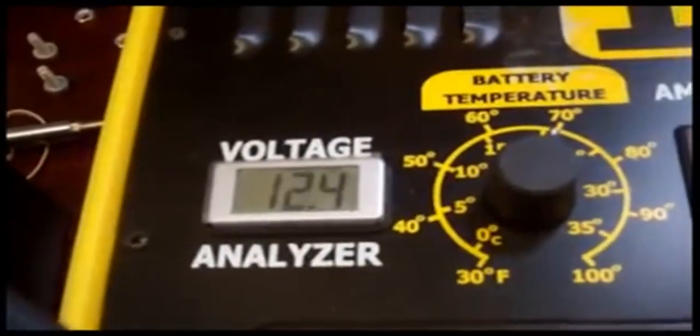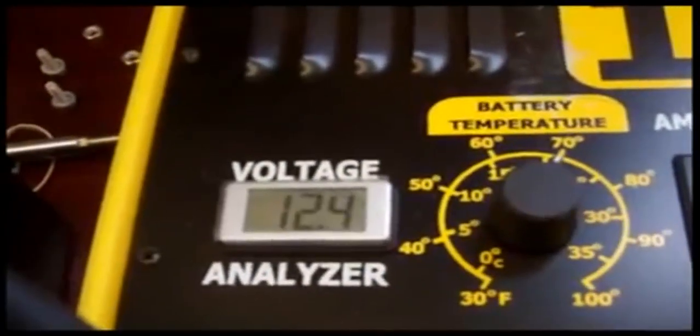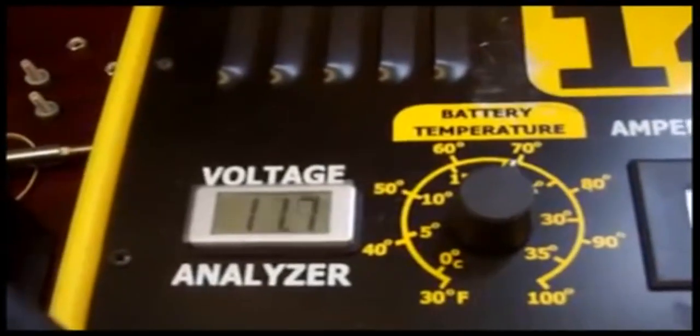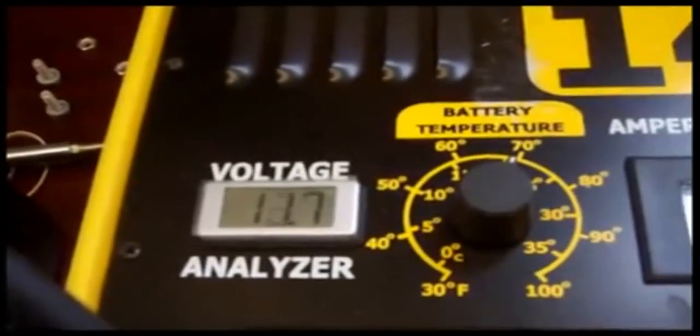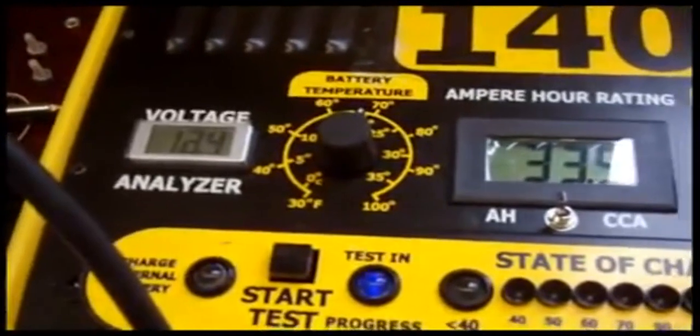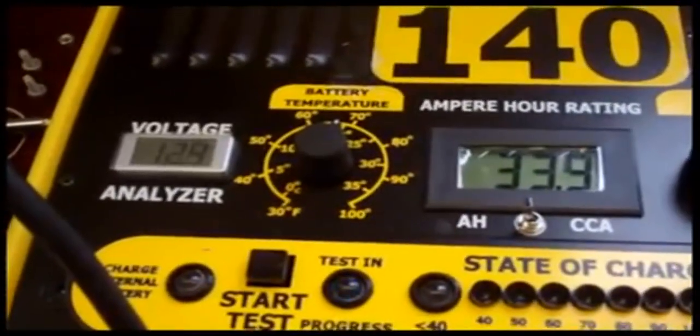Upon completion of the test, the device will give an indication of the percentage of the rating of the battery that is still good. Batteries that are at an 80% rating or higher are generally considered passing. Anything less than that is considered a failing test.